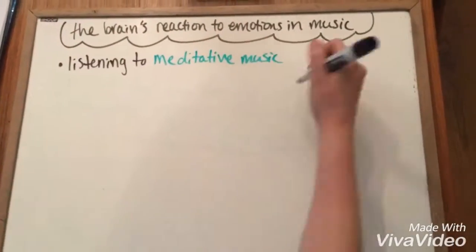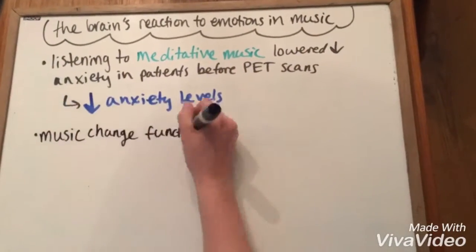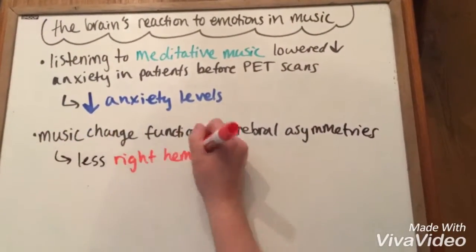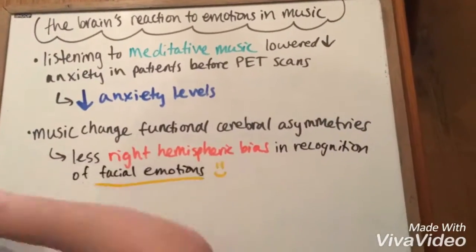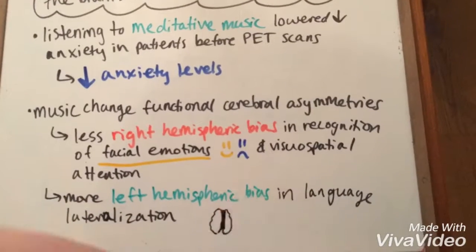Finally, listening to meditative music can change functional cerebral asymmetries, such as less right hemispheric bias in recognition of facial emotions and visual-spatial attention, and more left hemispheric bias in language lateralization.